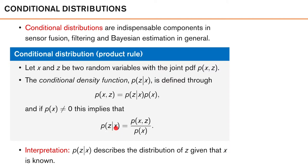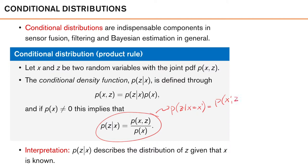Now, typically, we view this as a function of z, where x is just some known constant value. In our case, this is usually the value of some measurement that we have already observed. To make this a bit more obvious, we could rewrite this expression as p of z where x is equal to some x prime — so x prime is just some constant value. Then we get p of x prime and z divided by p of x prime. Now, as x prime is just some constant, then p of x prime is also some constant, and p of x prime comma z now only depends on z, so we can view x as a parameter in this function.